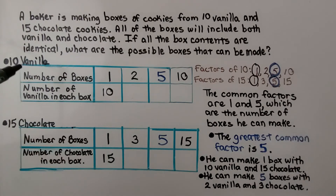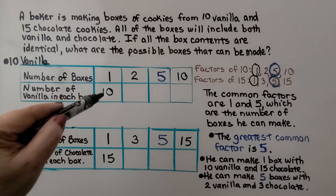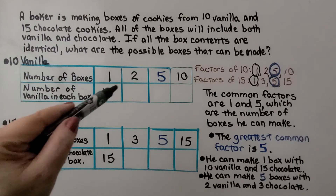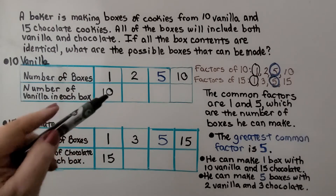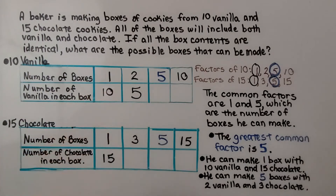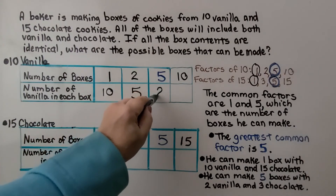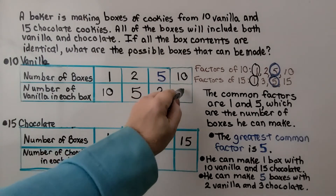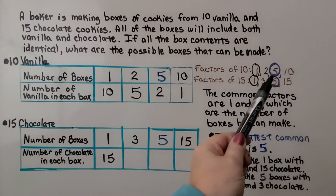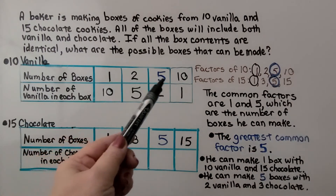Because there are 10 vanilla cookies, if he made 1 box it could have 10 vanilla cookies in it. If he makes 2 boxes, there will be 5 cookies in each box. If he makes 5 boxes, there will be 2 cookies in each box. And if he makes 10 boxes, there will be 1 cookie in each box. The factors of 10 are 1, 2, 5, and 10.